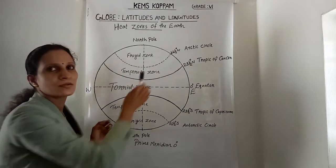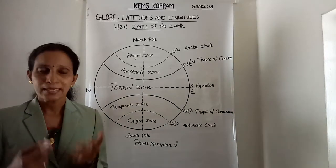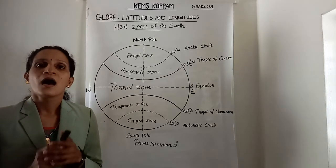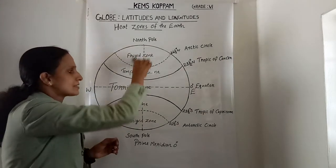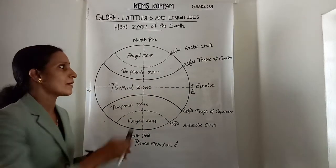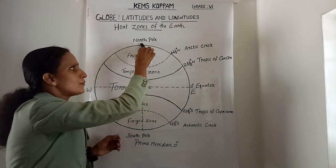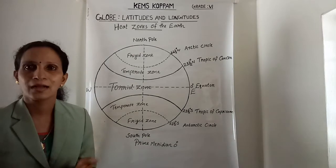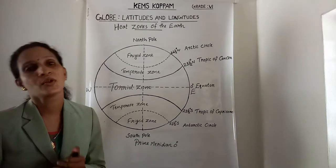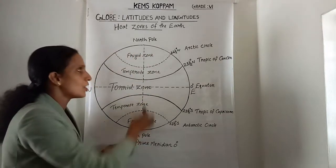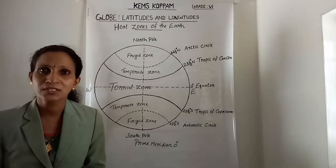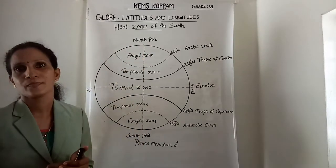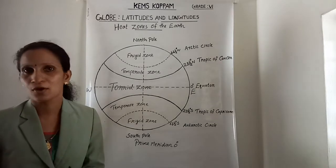These are called the cold zones. Next, what are longitudes? All semi-circles running from the North Pole to the South Pole are called the meridians of longitude.